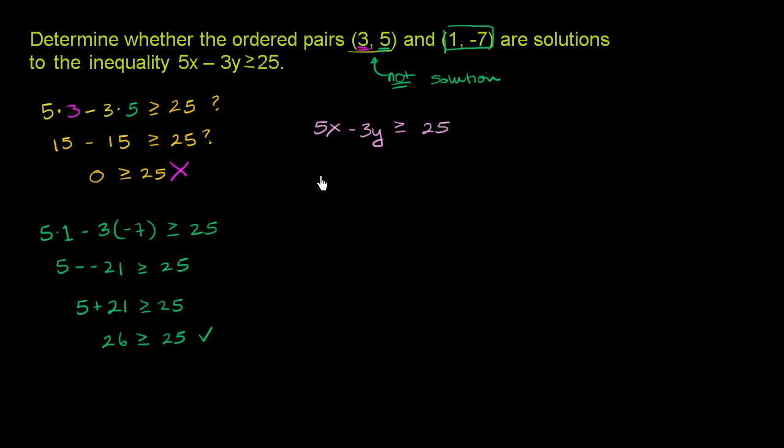Let me write this inequality in slope-intercept form. So this would be the same thing. If we subtract 5x from both sides, we get negative 3y is greater than or equal to negative 5x plus 25. I just subtracted 5x from both sides. So that gets eliminated, and you have a negative 5x over here.